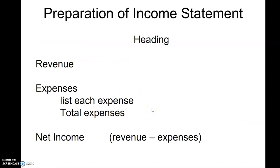We start with the income statement because financial statements must be done in order. The income statement shows the profit of the company — accountants call profit net income. We start with revenue, then list all expenses and find the total expenses, then subtract: revenue minus expenses gives us net income.